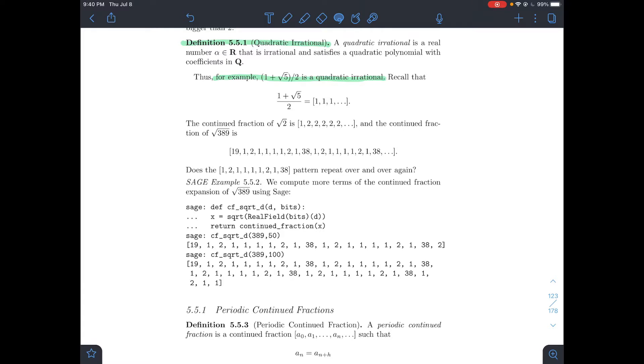For example, 1 plus root 5 all over 2 is a quadratic irrational. It satisfies x squared minus x minus 1. This is the golden ratio.